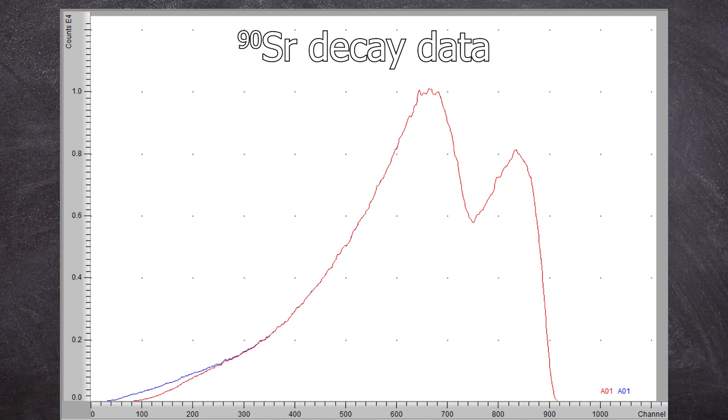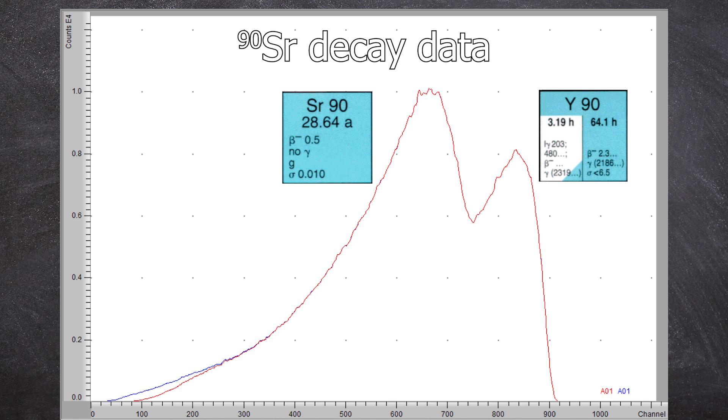And let's take a look at the LSC spectrum. We can see both radionuclides in the low energy range. We have the strontium-90, and in the high energy range with an average of 932 kiloelectron volts, we have yttrium-90.